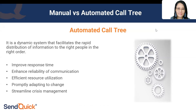The second benefit is increased reliability of communication. Automated call trees support multiple channels — for example, SMS and automated voice calls — providing a fallback mechanism. SMS is not guaranteed delivery, so having alternative channels reduces the risk of messages not reaching intended recipients.